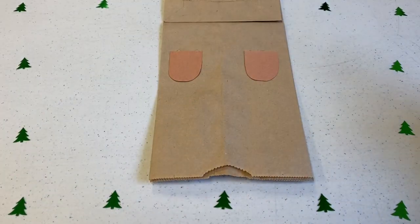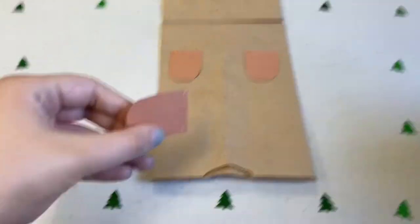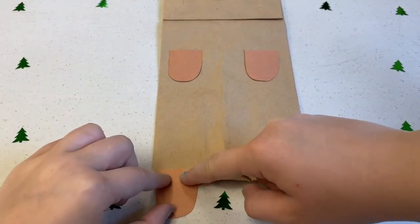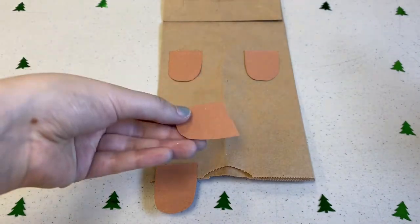Two more of the half ovals will be the back paws. We'll be gluing these along the bottom of the bag so it looks like our beaver is standing up.